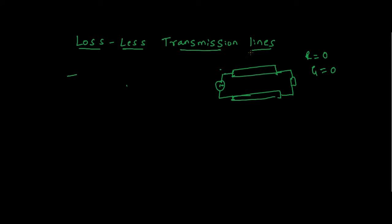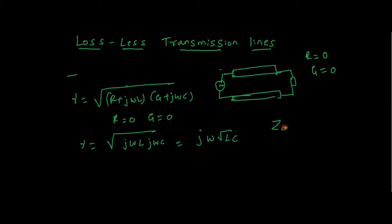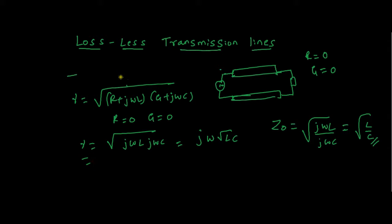For a lossless transmission line, the propagation constant γ, which is √((R + jωL)(G + jωC)), becomes after putting R=0 and G=0: γ = √(jωL · jωC) = jω√(LC). The characteristic impedance for the lossless transmission line becomes √(jωL / jωC) = √(L/C). So these are all the key constants for a lossless transmission line.